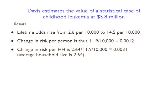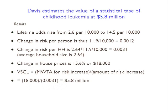So there's an average household size of 2.64. Multiply that by 11.9 and you get basically a 0.0031 change in leukemia risk. The change in house prices was 15.6%, and the average housing price gives us about an $18,000 change. The value of a statistical case of leukemia is then 18,000 divided by 0.0031, which works out to $5.8 million. The conclusion is that people are willing to pay a large amount to avoid at least this perceived leukemia risk.